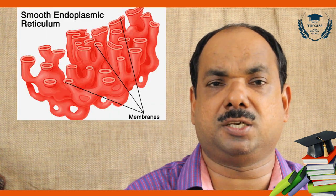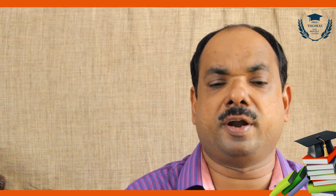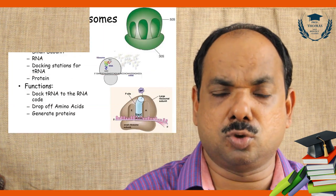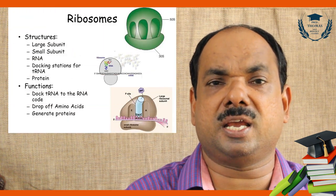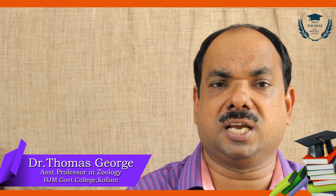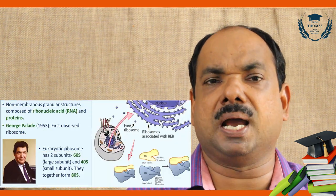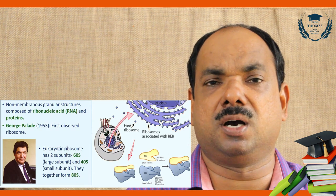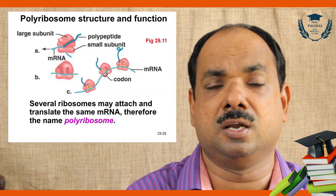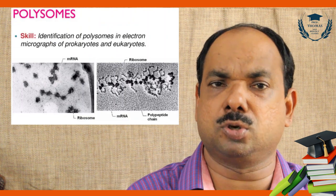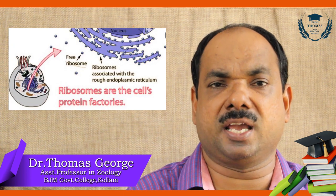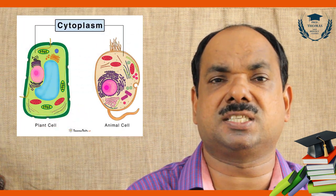Without ribosomes, the endoplasmic reticulum is called smooth endoplasmic reticulum, which helps in steroid synthesis or detoxification. Ribosome = rRNA + protein. Some rRNA have catalytic capacity and are called ribozymes. George Palade discovered ribosomes in 1953. When a single mRNA contains many ribosomes, each synthesizing a growing polypeptide chain, it is called a polyribosome or polysome, appearing like a Christmas tree.